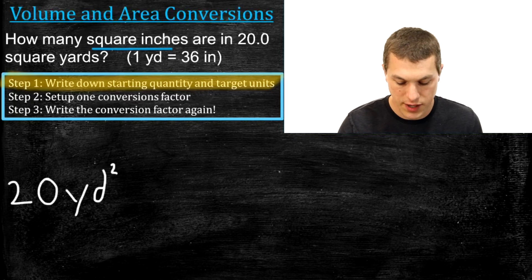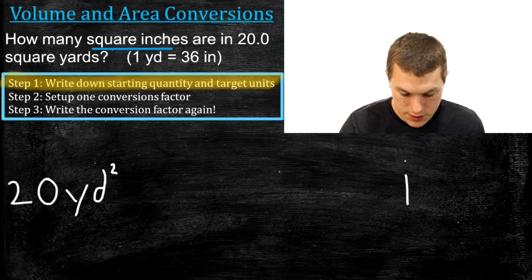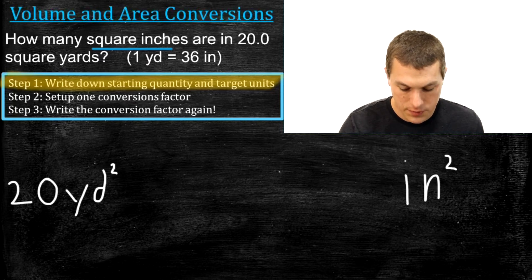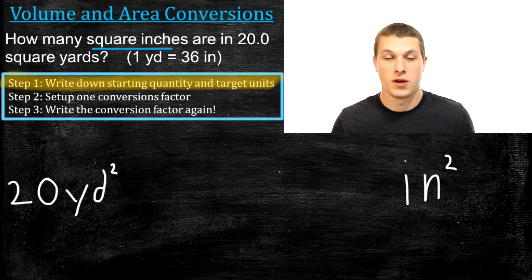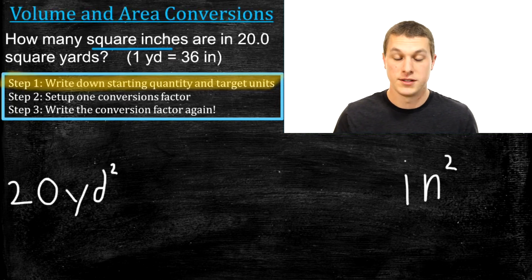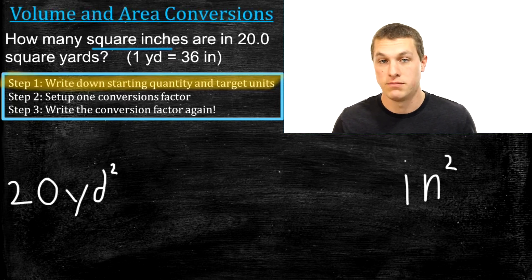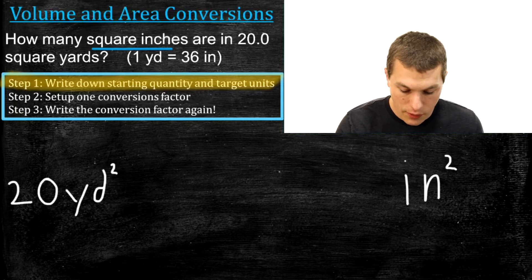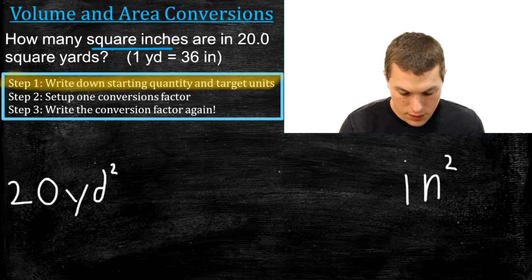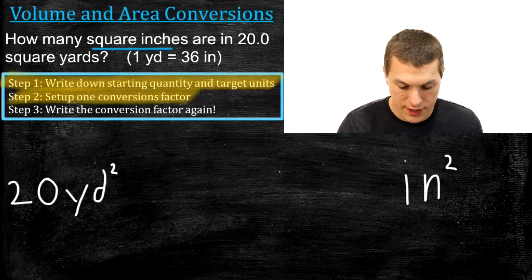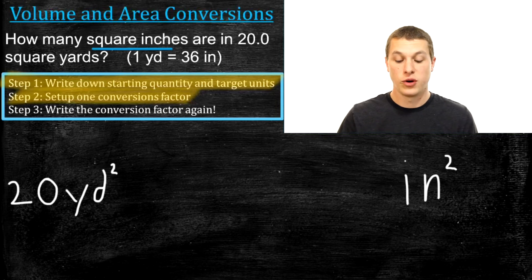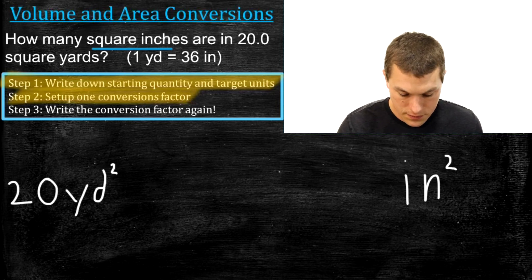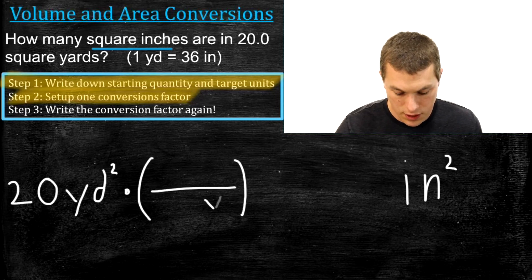Our starting quantity is 20 yards squared, and we want to get to square inches. Notice that inches squared and square inches are just two ways to say the same unit, just like square yards and yards squared are the same unit. For step two, we set up one conversion factor to go from yards to inches. We write yards on the bottom to cancel it out, and inches on top.